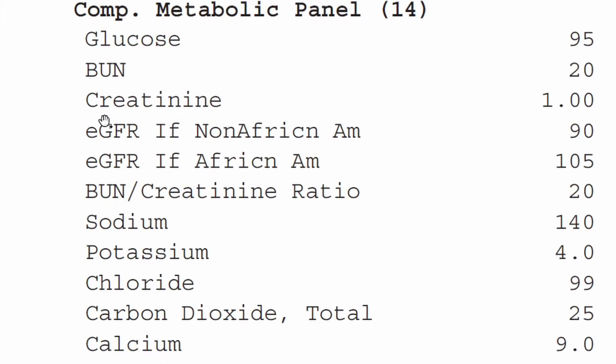Next on the list is Creatinine. This is a waste product of metabolism that is normally passed freely through your kidneys. So if we test your blood and notice that Creatinine is elevated in your bloodstream, it's a good indication that your kidneys are not letting this pass through them, and that would be a sign of kidney obstruction.